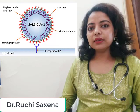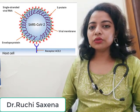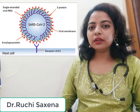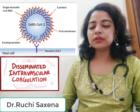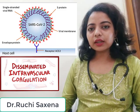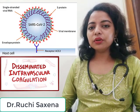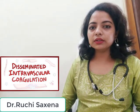ACE2 acts as the receptor for the virus, and these angiotensin-converting enzyme 2 receptors are found on the surfaces of the lungs, heart, arteries, and kidneys. Because of this, we get more severe symptoms in major organs like the heart, kidney, lungs, and arteries.